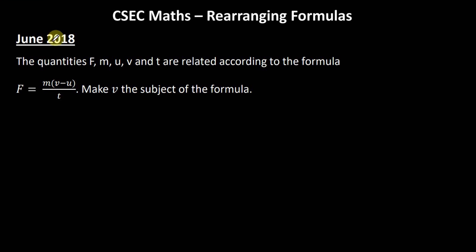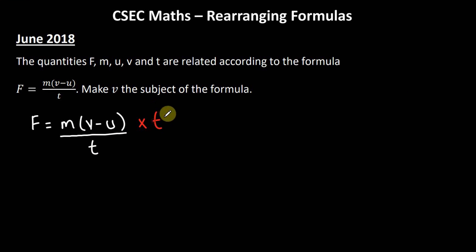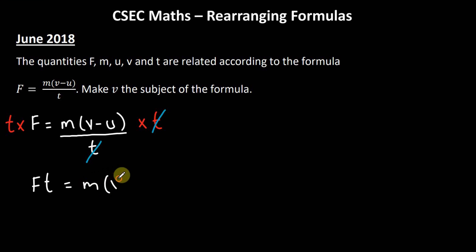Now looking at the question given on the June 2018 paper. The quantities f, m, u, v, and t are related according to the formula f = m(v − u)/t. Make v the subject. We can get rid of t first — since we're dividing by t, we multiply both sides by t. T cancels t, leaving us with ft = m(v − u).